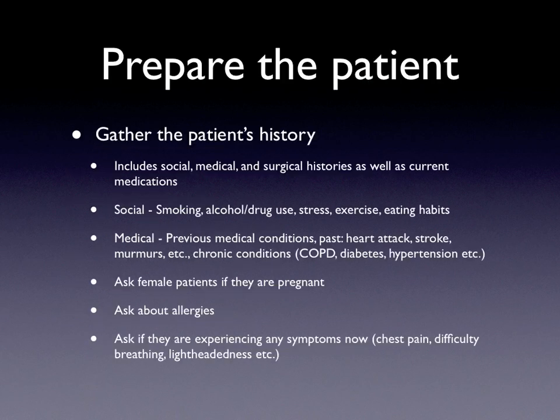First, let's talk about preparing your patient. You need to gather a patient history. This may have already been done by other folks before they reach you, so you may not need to do this in all that much detail, but you should ensure the patient's social, medical, and surgical histories, as well as current medications, are known to the care team. Social history includes things like smoking, alcohol, or drug use, stress at work or in relationships, exercise habits, and general eating habits.